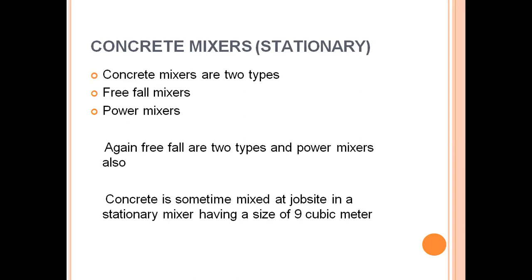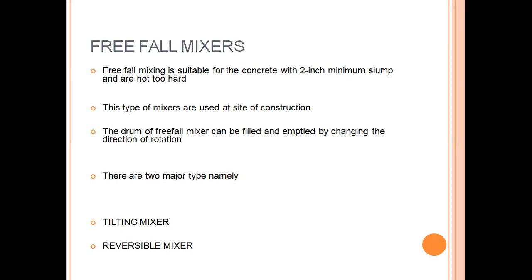Stationary mixers are of two types: free fall mixers and power mixers. Concrete is sometimes mixed at the job site in stationary mixers having a size of 9 cubic meters. Free fall mixers are of two types: tilting mixers and reversible mixers. Free fall mixing is suitable for concrete with a two-inch minimum slump. The drum of a free fall mixer can be filled and emptied by changing the direction of rotation.